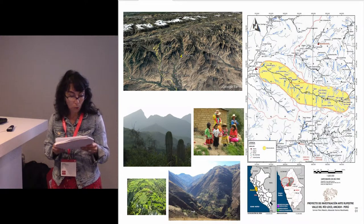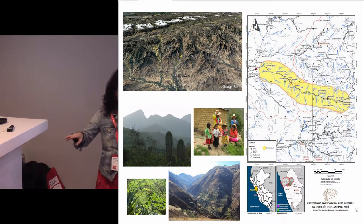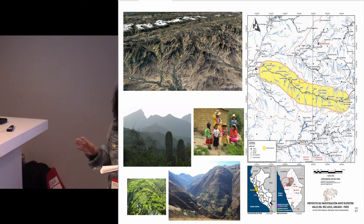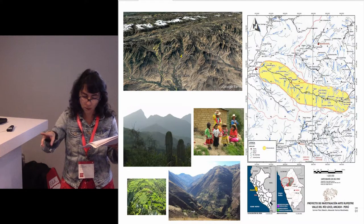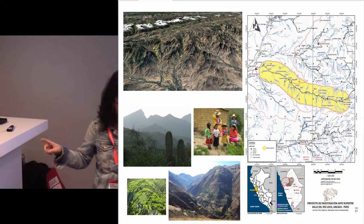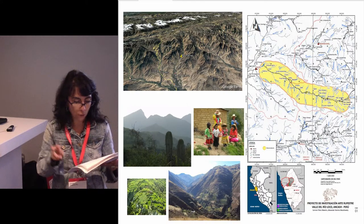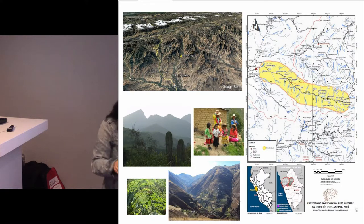One of the project's objectives is to establish links between rock art and vertical control of the ecological zones of the valley through time. It is curious, for example, that painting sites only appear from 1,380 meters above sea level, and they are associated with the transition of two ecological steps, the Yunga and the Quechua. In fact, between the sea and this height, there are only engravings.